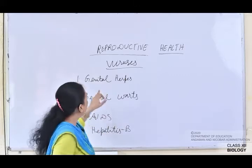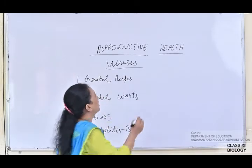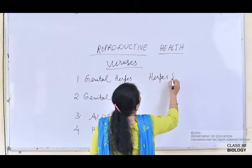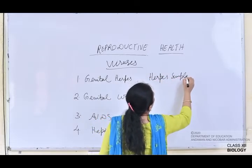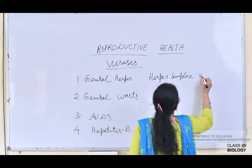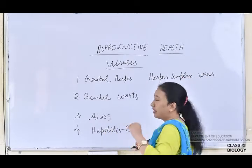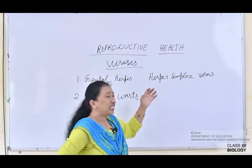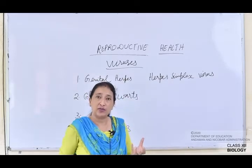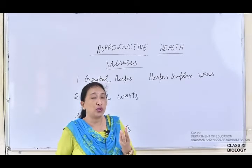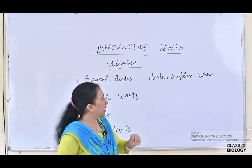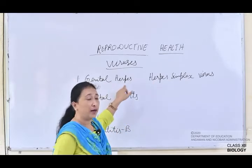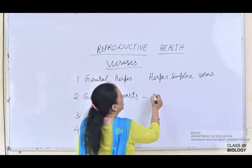Genital herpes is caused by the Herpes Simplex Virus. It is found in the genital region. It causes itching sensation, discharge, swollen nodes, and painless tumor-like growths.